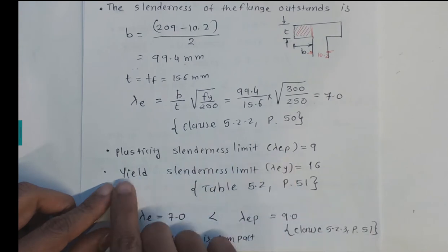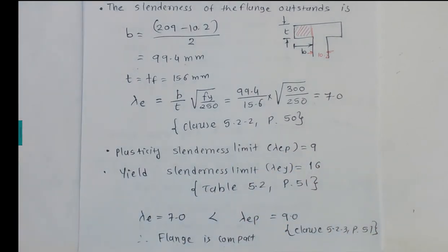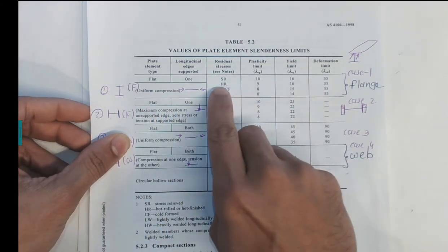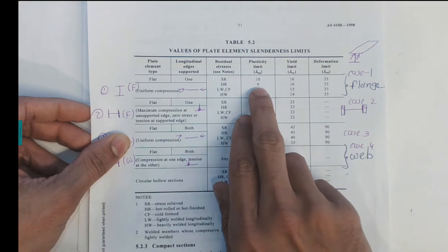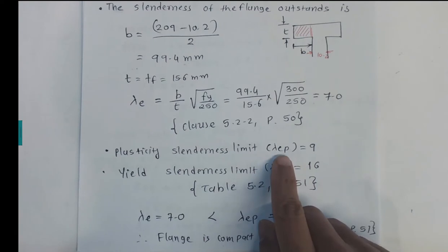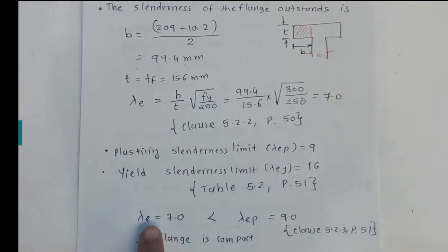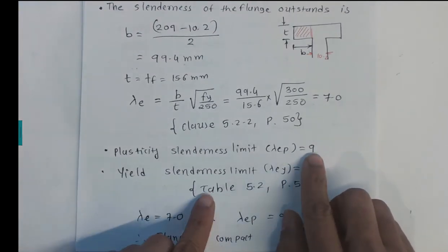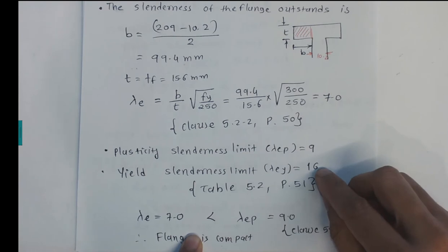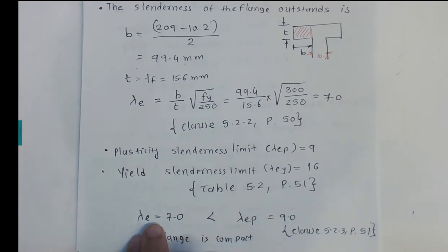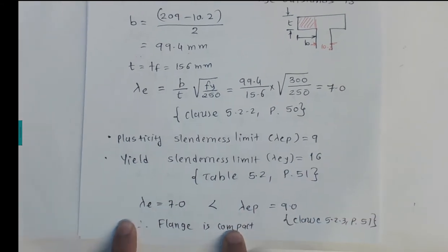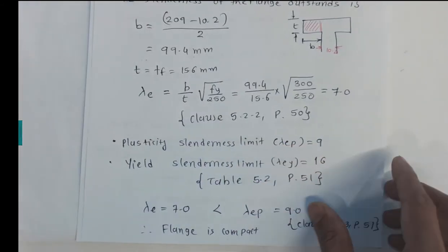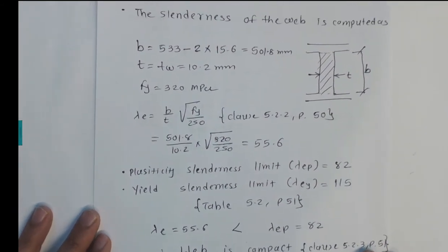From Table 5.2, for a hot-rolled section flange, the plastic slenderness limit λ_EP = 9 and yield slenderness limit λ_EY = 16. Since λ_E = 7 is less than λ_EP = 9, the flange is classified as compact.